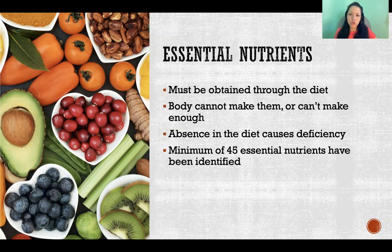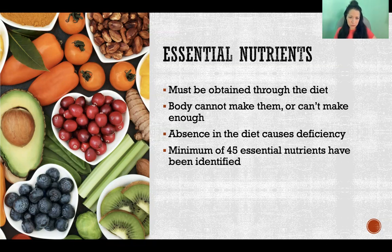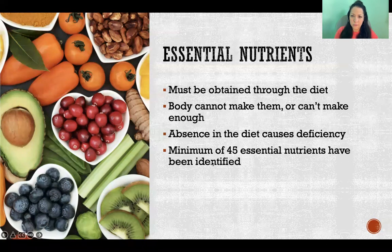So an essential nutrient is a chemical that we cannot make ourselves in the body, or that we can't make enough of. So we must get it through the diet to maintain good health. There are at least 45 essential nutrients that have been identified, and it's possible that there are more that we just haven't identified or recognized yet.